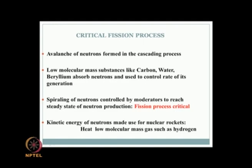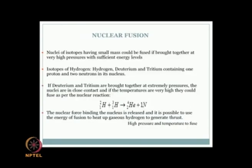When neutrons are generated at steady state, the fission process is said to be critical. Reflectors can focus neutrons back into the reactor if too many are absorbed. The kinetic energy of neutrons is used in nuclear rockets: a low molecular mass gas such as hydrogen is heated to high temperatures by the neutrons, generating high jet velocity — the principle of nuclear rocket propulsion.